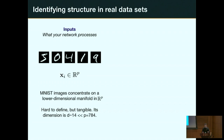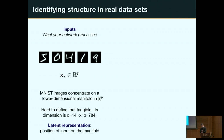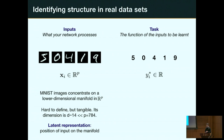We call inputs structured if they concentrate on some manifold, and we call the position of an input on this manifold its latent representation. The second type of structure concerns the task — the function of the inputs you're trying to learn. For MNIST this could be the digit value or whether the digit is odd or even. We look at two models: a teacher task, where the label is a function of the whole input, and a latent task, where the label is a function of the latent representation.